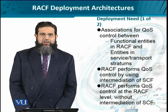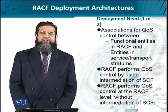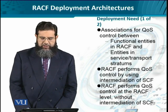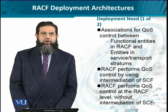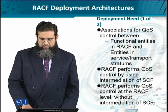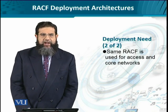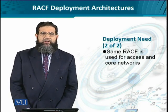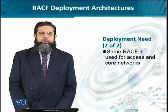The first option is when the service control function is involved as an intermediary. The second one is when the RACF performs QoS control without the intermediation of the SCF. And the third one is when the RACF is common both for the access and core networks.